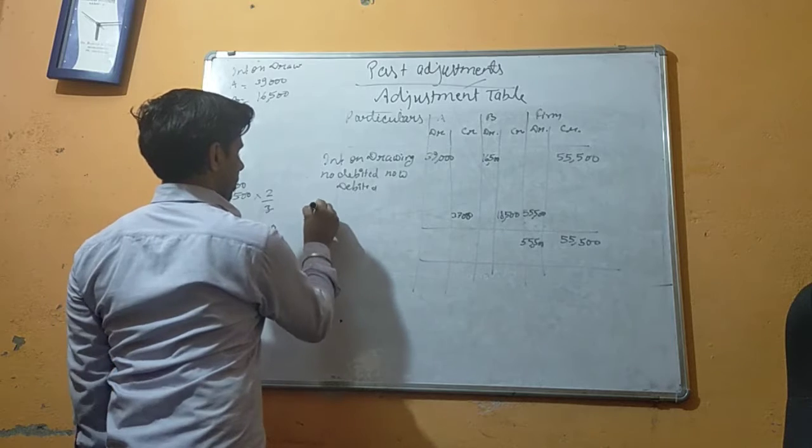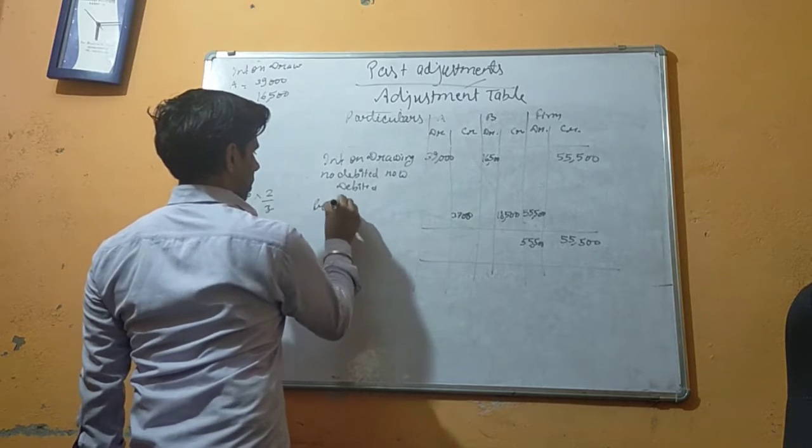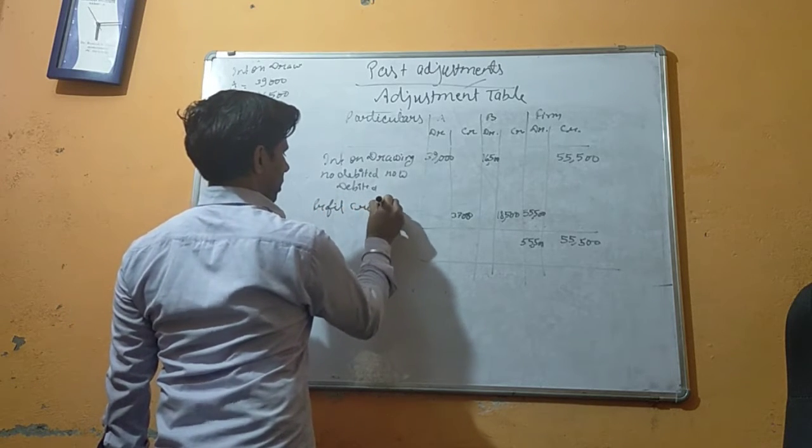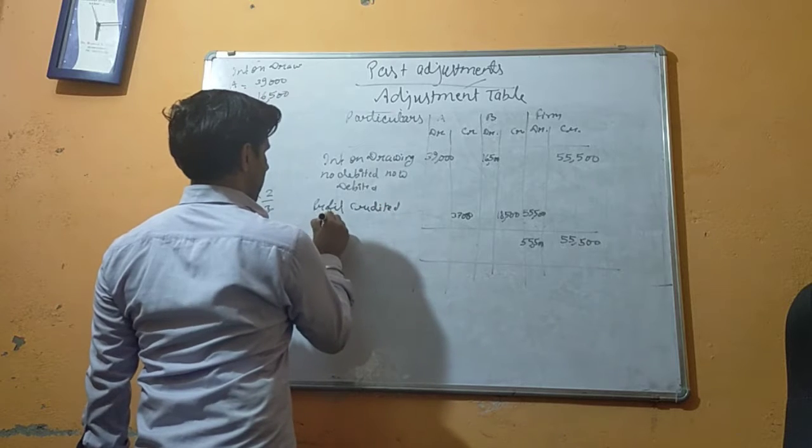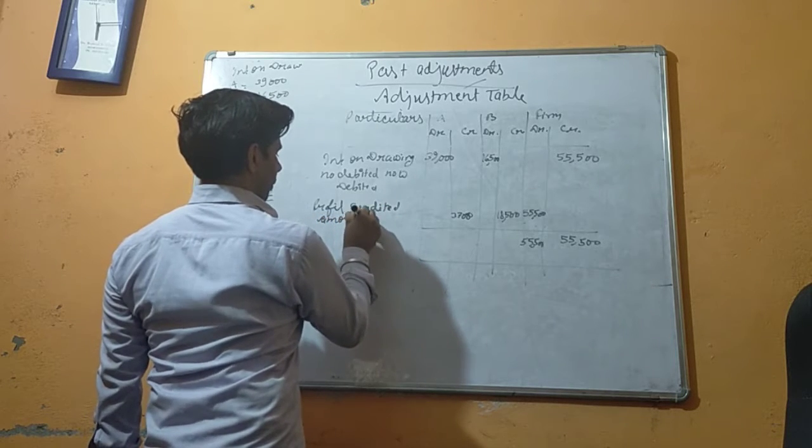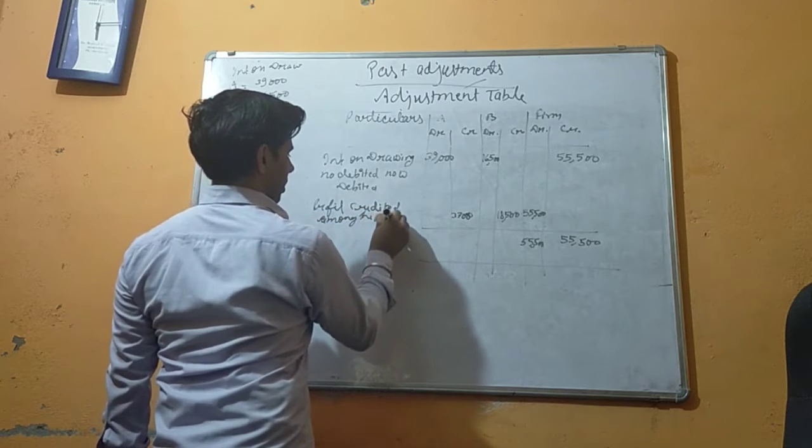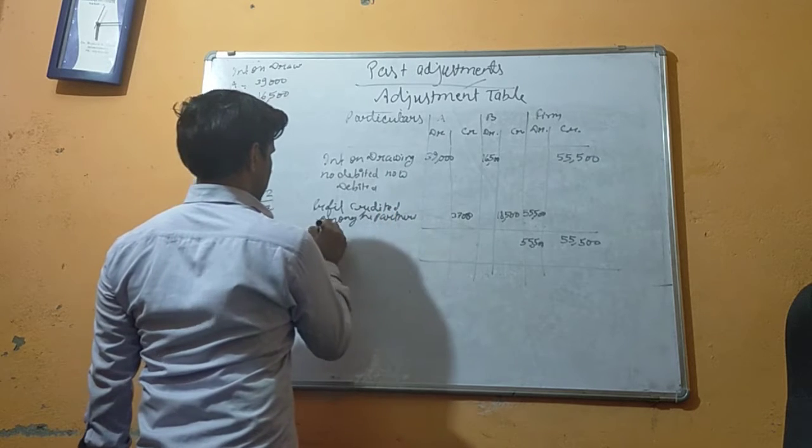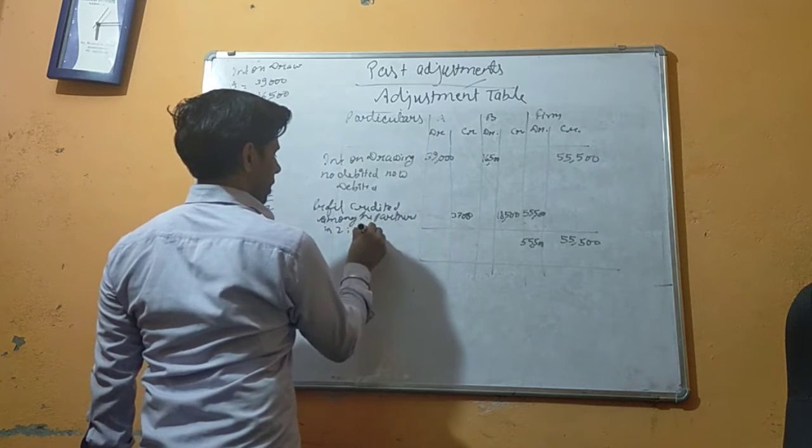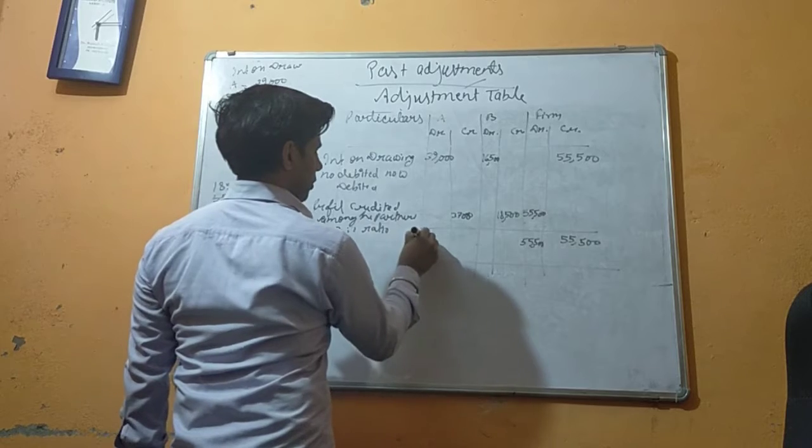So this is what's called profit created among the partners in 2 to 1 ratio, so this is $39,000.